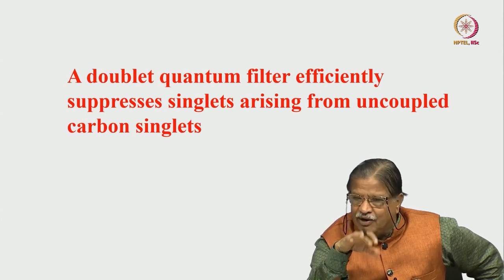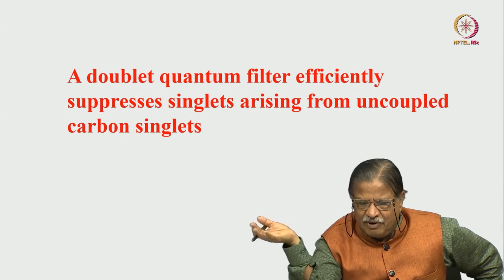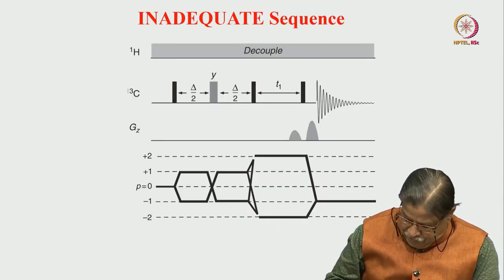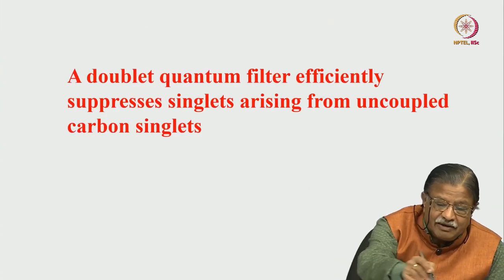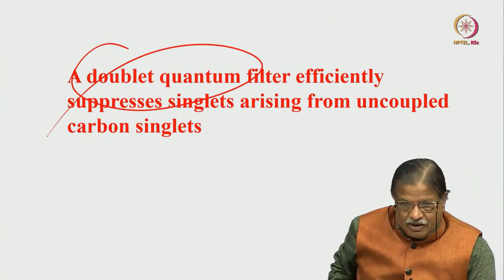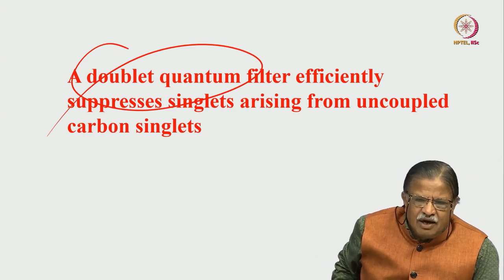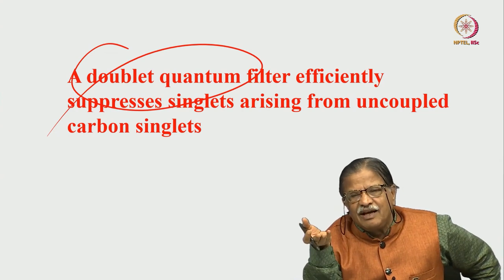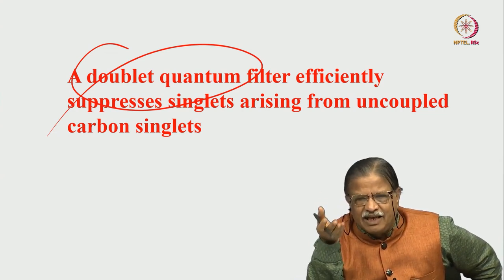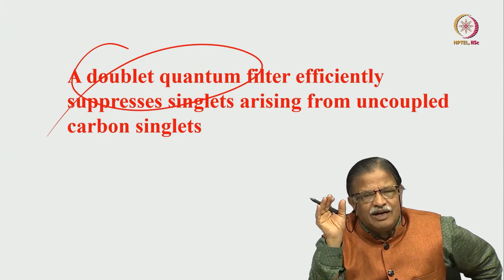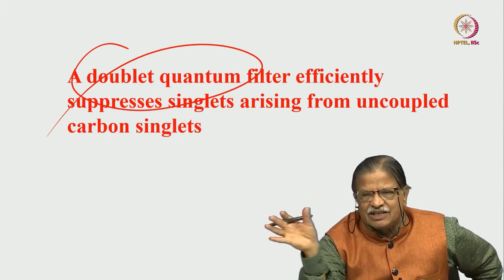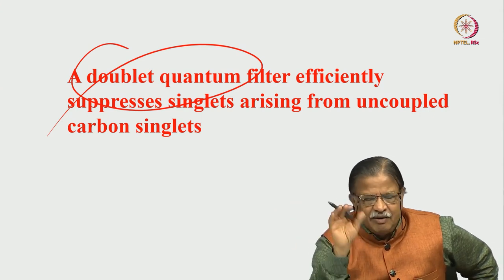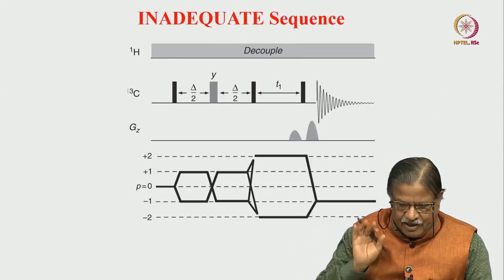That is why it is called INADEQUATE — the insensitive nuclei double quantum filter experiment. You may ask: why only double quantum, not higher quantum? There is no need because the possibility of three carbons existing simultaneously as carbon-13 is 1 in a million. So only a double quantum filter is sufficient. Even a triple quantum filter can filter parent signals, but double quantum is just sufficient.